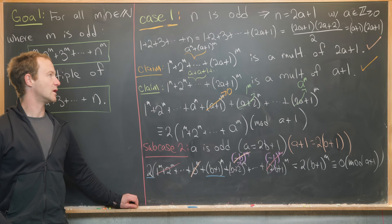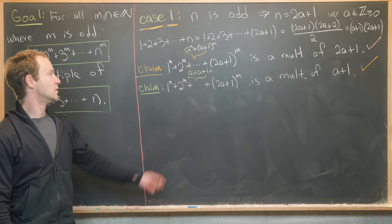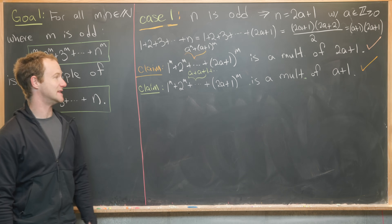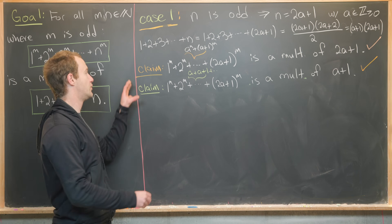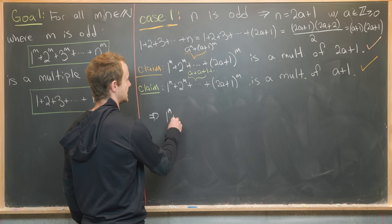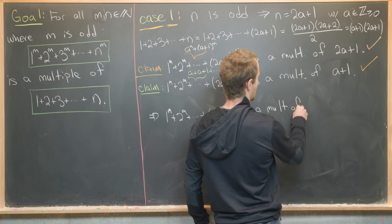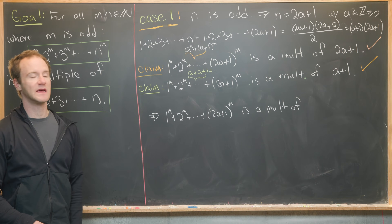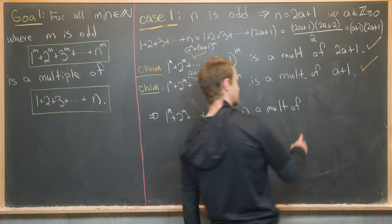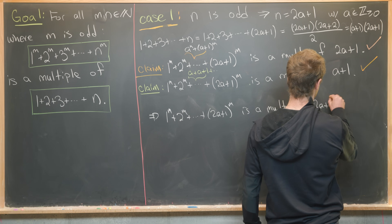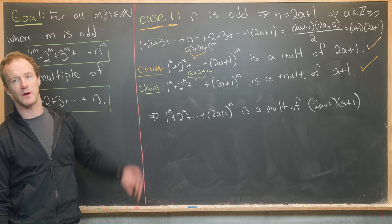Summarizing Case 1: when n is odd (n = 2a+1), we showed that 1^m + ... + (2a+1)^m is both a multiple of (2a+1) and (a+1). These two factors are relatively prime, so the sum is a multiple of their product (a+1)(2a+1), which is exactly the triangular number 1 + 2 + ... + n.